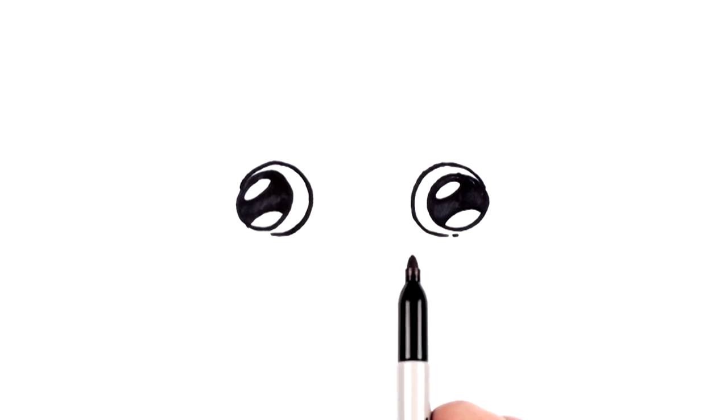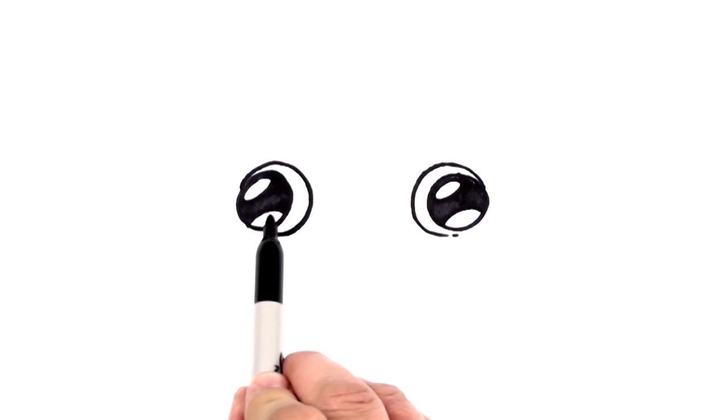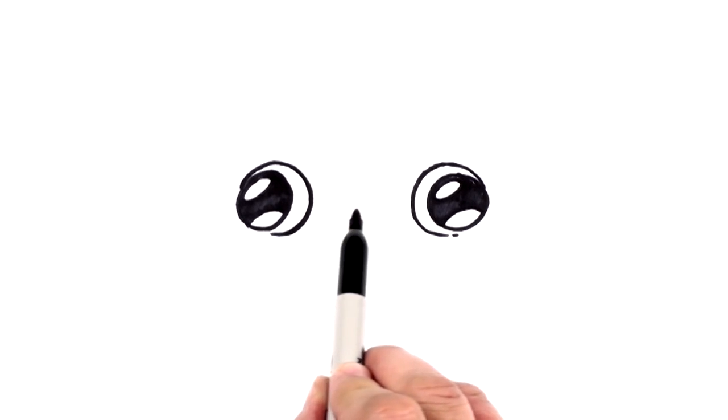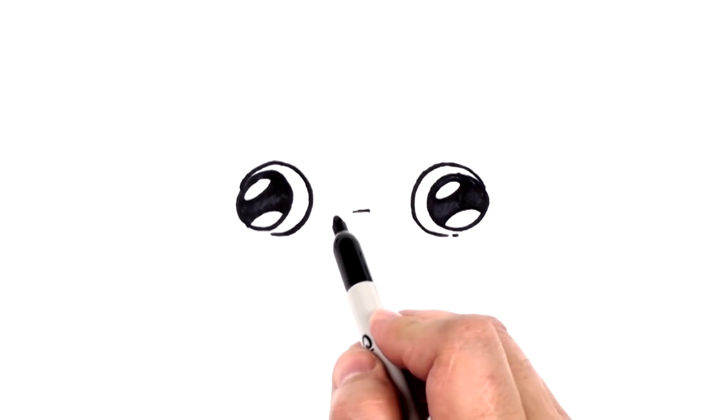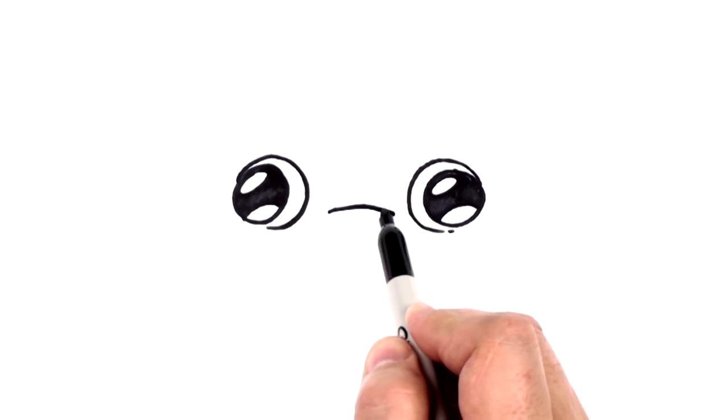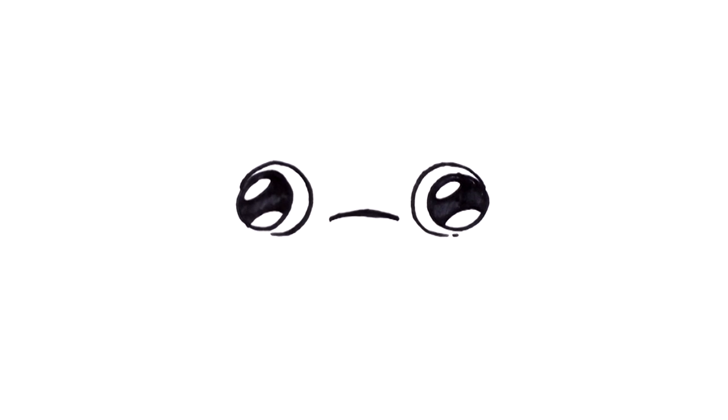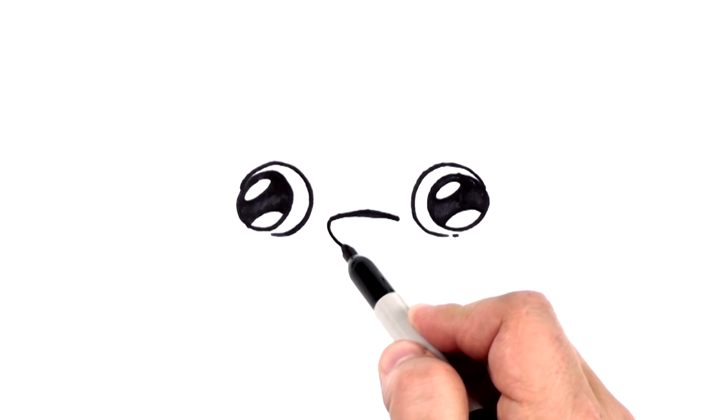Now the nose is going to fall right here between the eyes, right about here. So not quite to the center, but just below the center of eyes. And we're going to draw a little curve right there. And then we're going to draw a nice little curve below there like that.